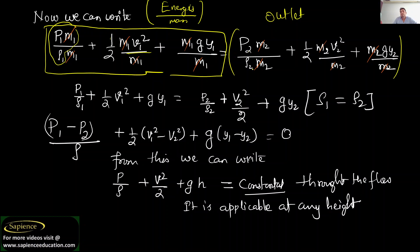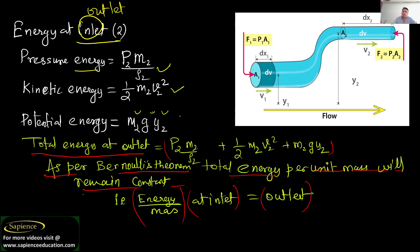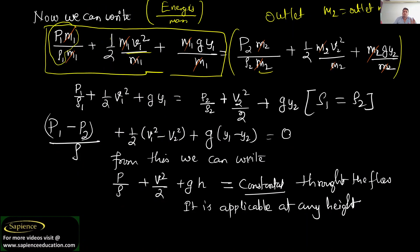At outlet the equation becomes P2·m2/rho2 divided by m2, plus half·m2·v2² divided by m2, plus m2·g·y2 divided by m2. Dividing through by mass gives energy per unit mass. We are talking about total energy per unit mass, so dividing by mass gives us the simplified form: P2/rho2 + half·v2² + g·y2.